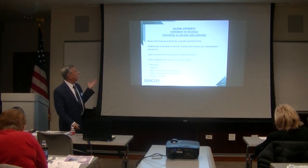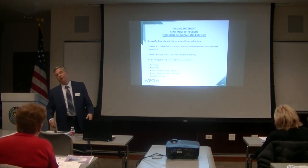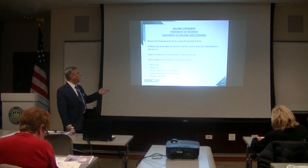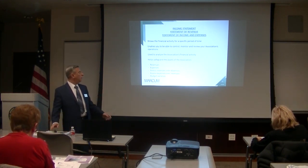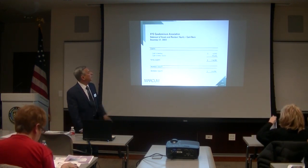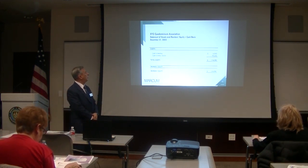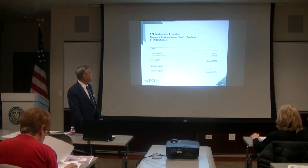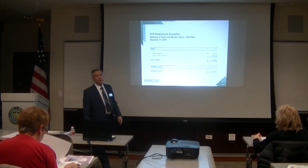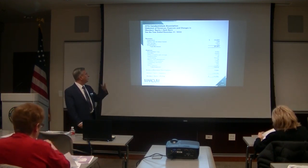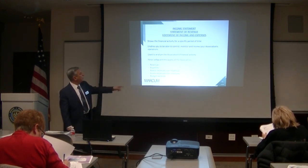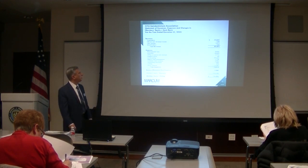Then there's your income statement, which shows what your activity is for a specific period of time. Here's an example of a cash basis balance sheet — all you have is cash. When you don't have funds, the equity section is called members' equity; when you do have funds, it's called fund balances. On the income statement, you can see the revenues collected and expenses paid out, and the ending balance equals your cash — just like having a checkbook.